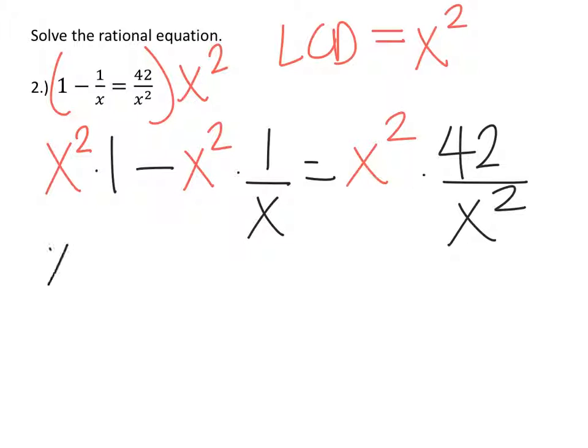That's going to be x squared minus x squared times 1 over x. One of my x's will cancel, I'll just have minus x equals x squared cancel 42.